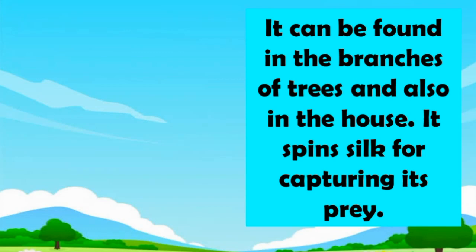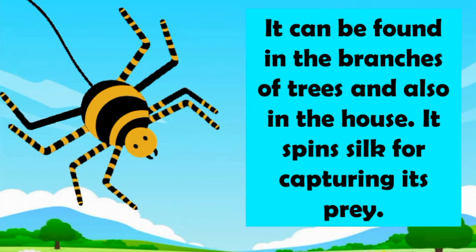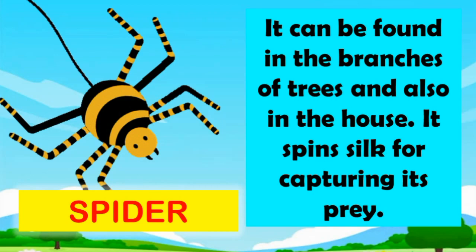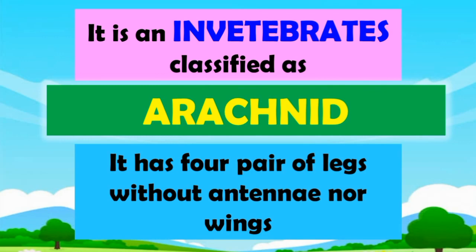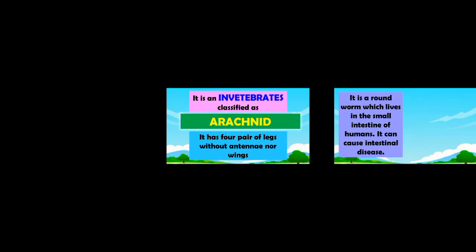Guess what? It can be found in the branches of trees and also in the house. It spins thin silk for capturing its prey. What is it? A spider! Correct! Spider is an invertebrate classified as arachnid. It has four pairs of legs without antennae nor wings.